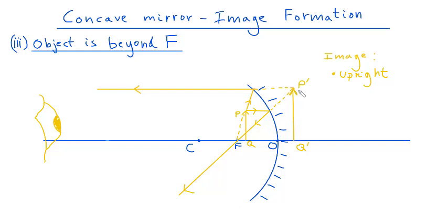Now, if you look at the size of this arrow here, it's clearly bigger than the size of our object arrow here. So our image has been magnified, is magnified, we say.